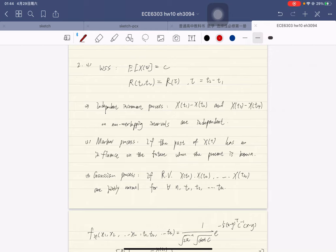Now I will talk about the second problem. The first is WSS process. A stochastic process is called wide-sense stationary process if its mean is a constant and the autocorrelation is a function of the time difference.